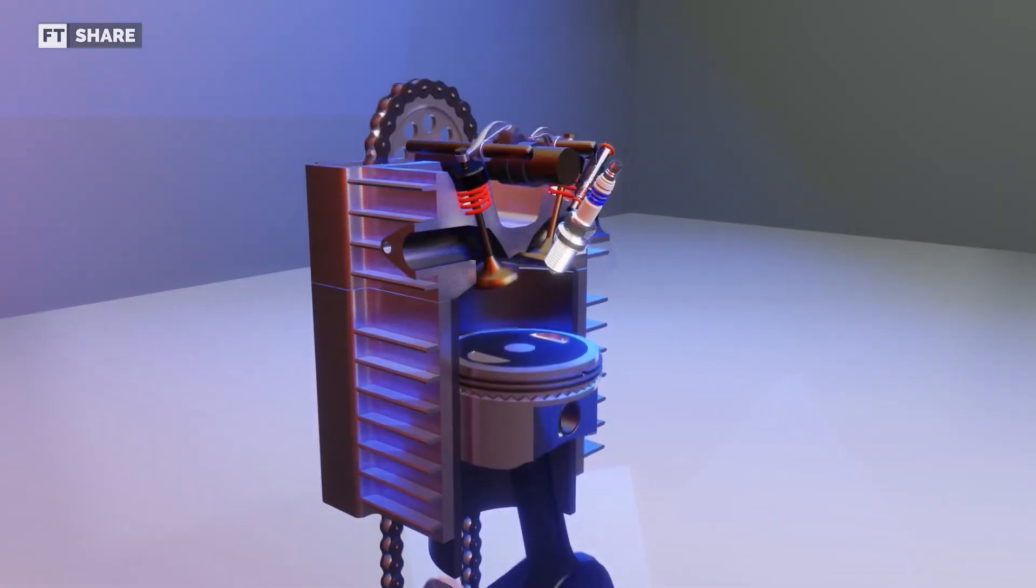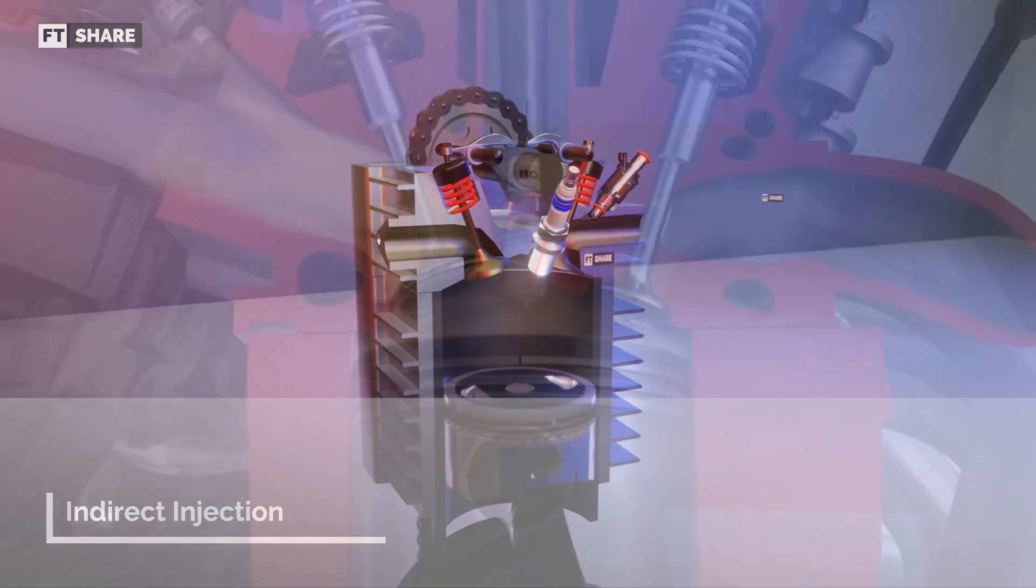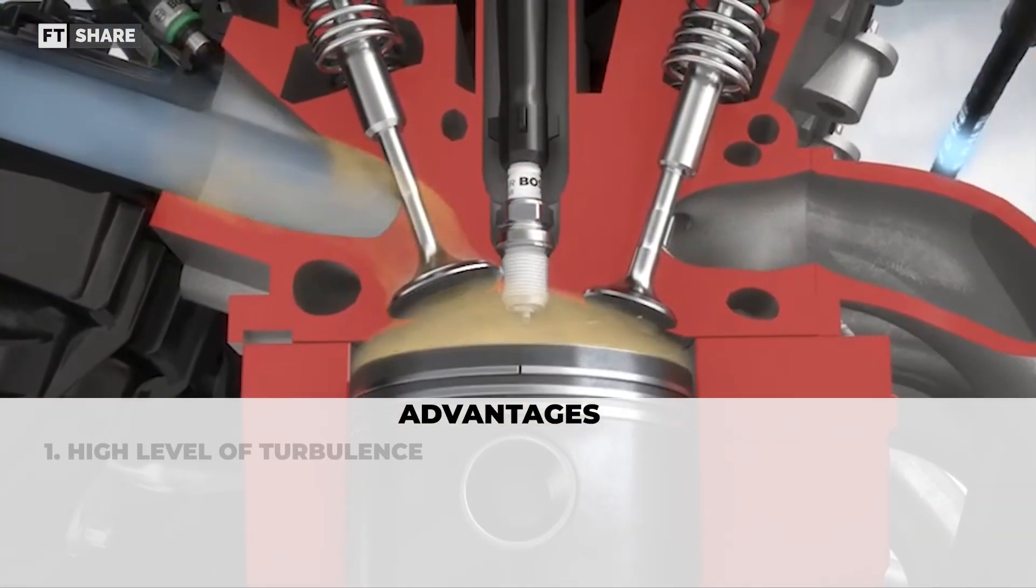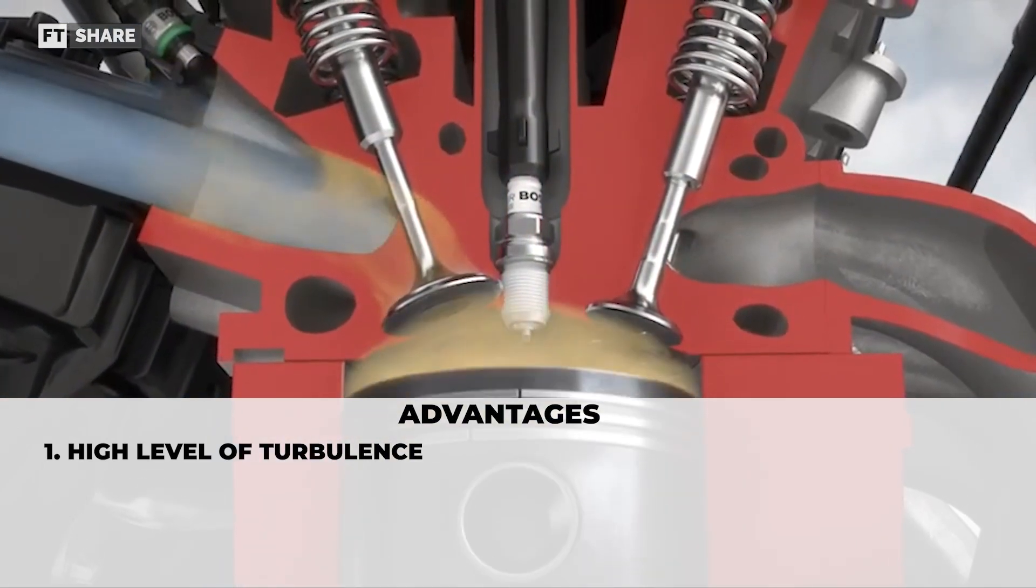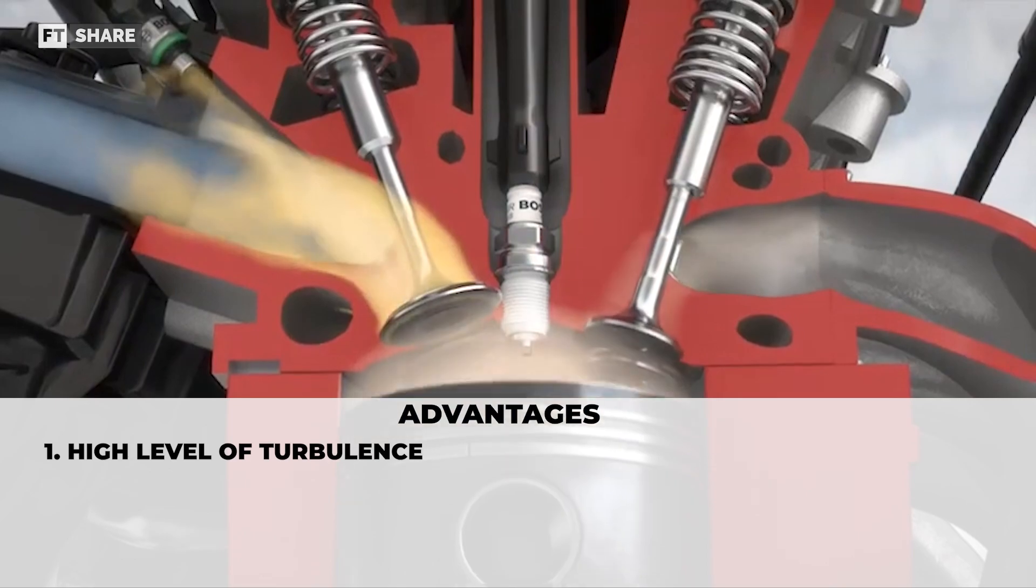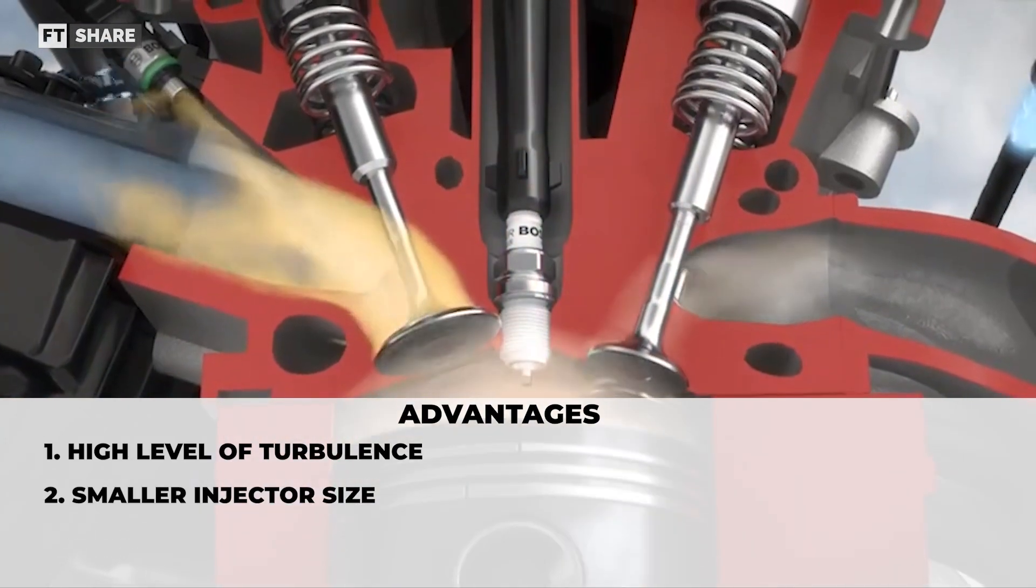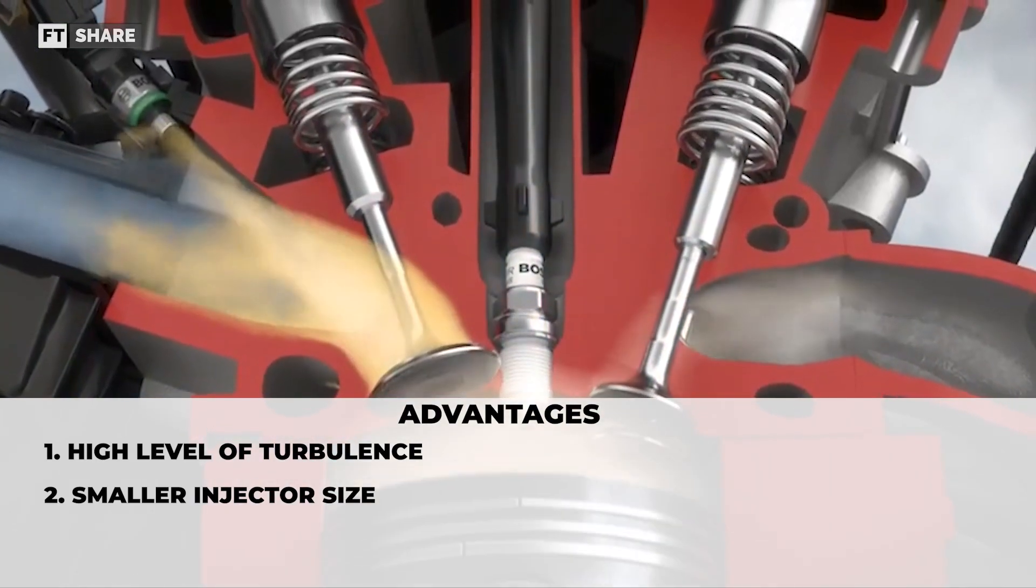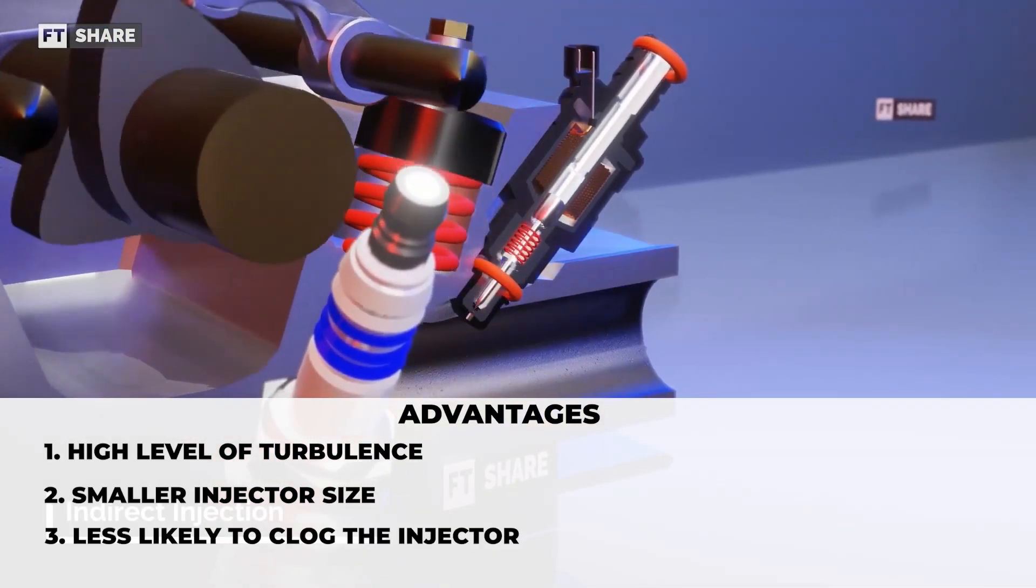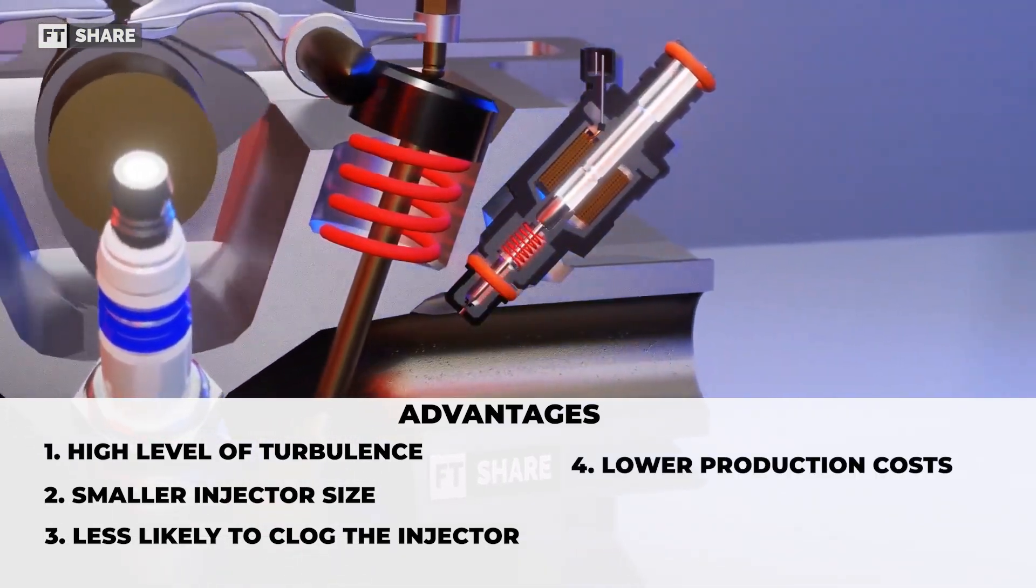Next, we will also discuss the advantages and limitations of indirect injection. For the advantages, first, the high level of turbulence at different engine speeds makes the mixing process more uniform. And then second, does not require a high power injector or a smaller injector size where the size of the high power injector takes up a lot of space. Third, less likely to clog the injector. Fourth, production cost tends to be lower.